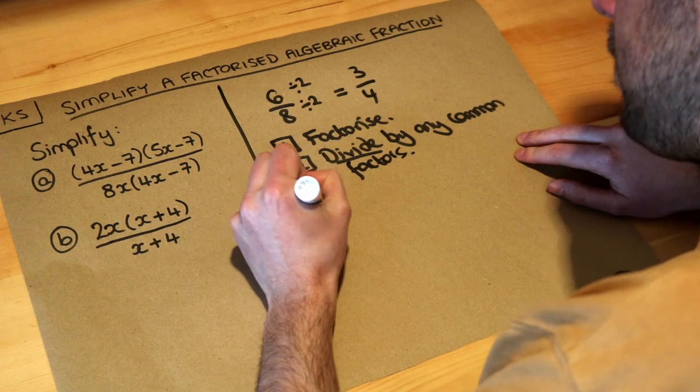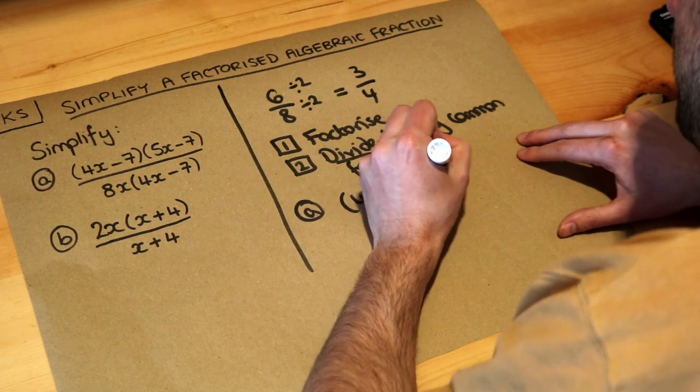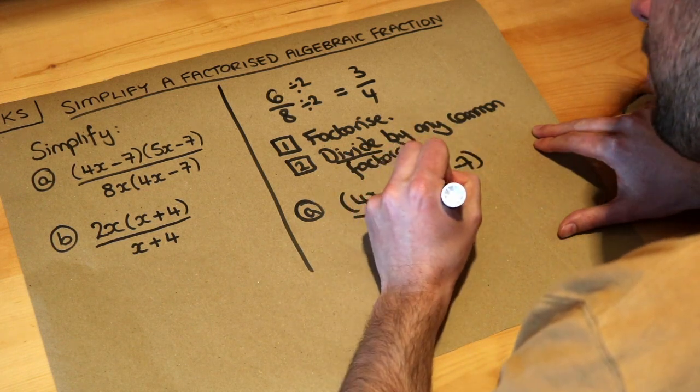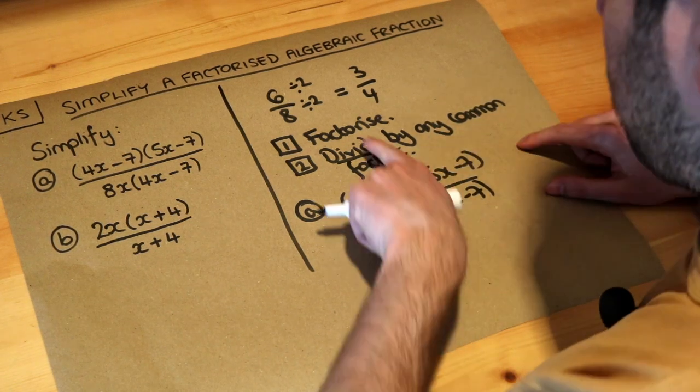So if we look at a, we've got (4x - 7)(5x - 7) over 8x(4x - 7). Now in this particular case, it's already been factorised for you.